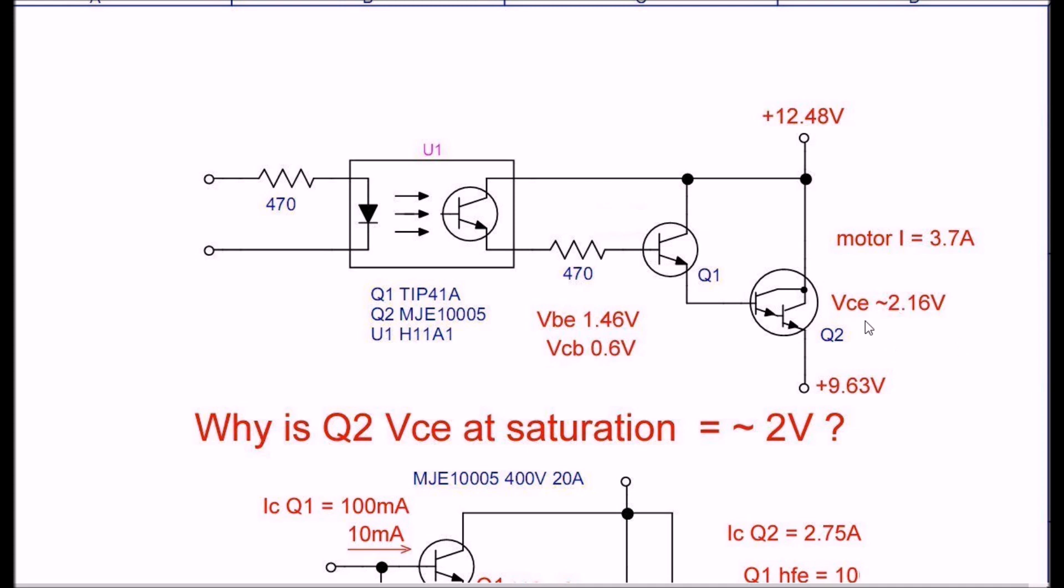The question becomes, why do I have a VCE, a voltage drop across Q2, of about 2 volts or so? In this case, these are live current measurements. I had a motor current of 3.7 amps. The motor would have been connected down here through an IGBT or MOSFET on the other side of the H-bridge. Nonetheless, it was real curious. When I measured between the collector and base of Q2, I measured 0.6 volts. And if I measured between the base and emitter of Q2, I had 1.46 volts. If you add them together, oddly, it comes pretty close to the 2.16 volts that I had measured across collector-emitter.